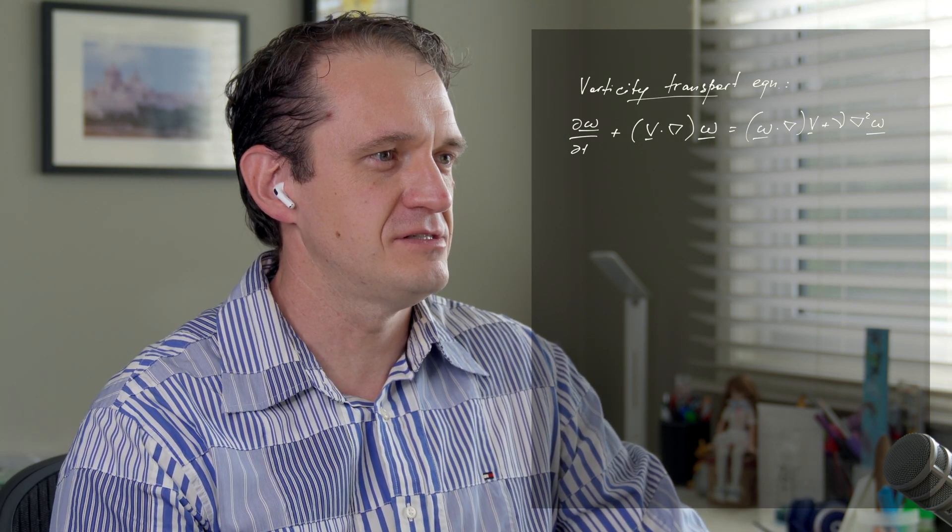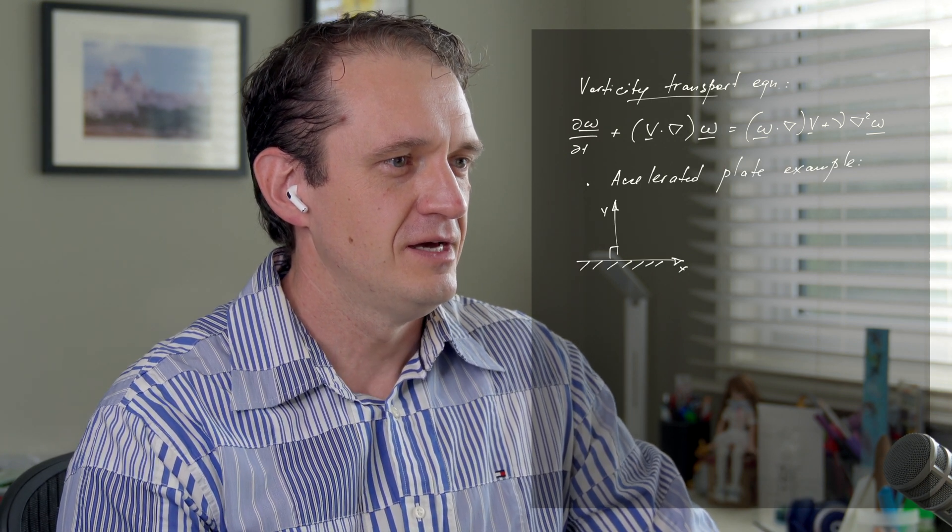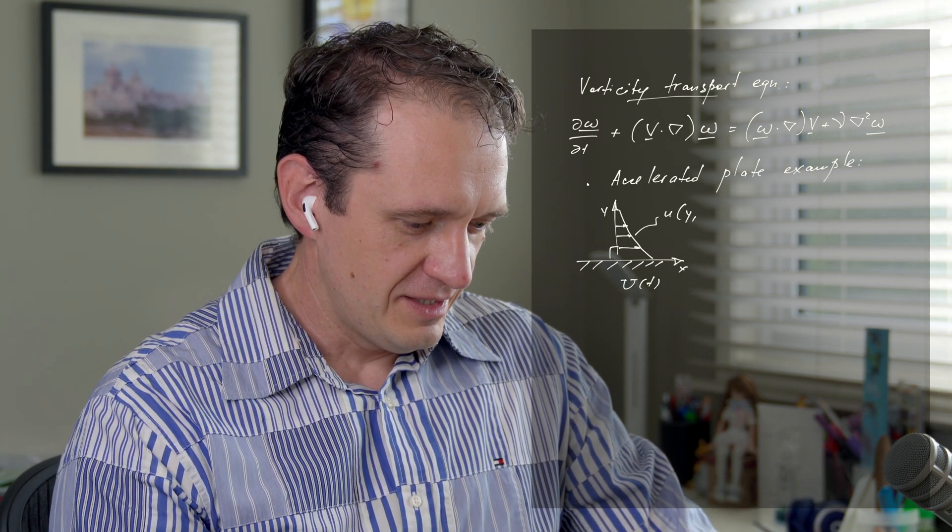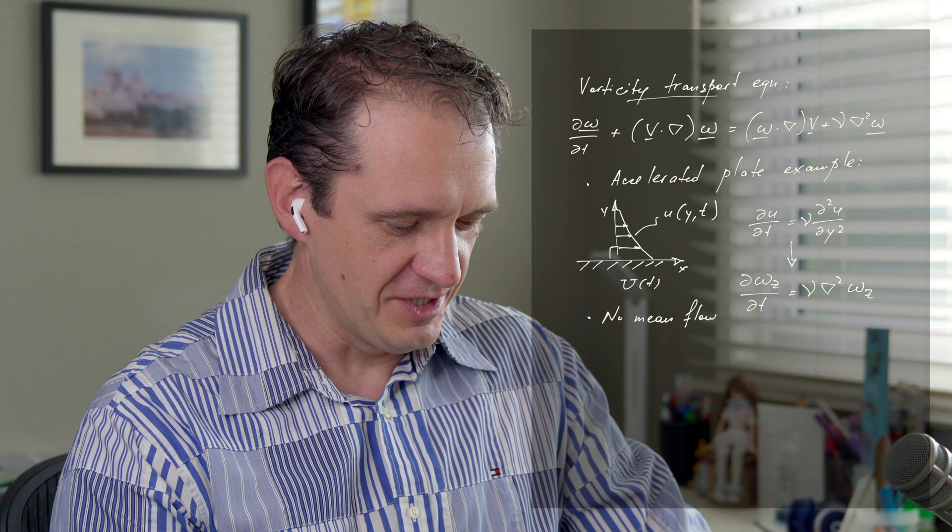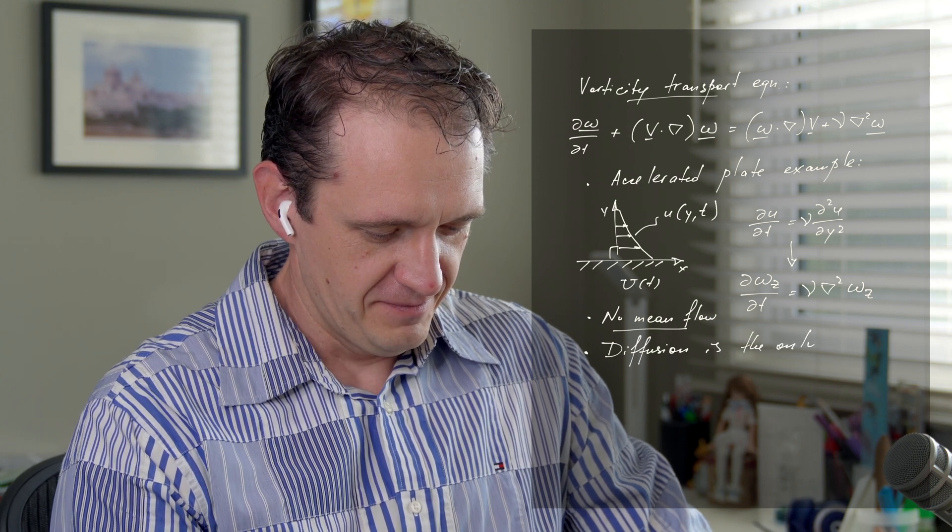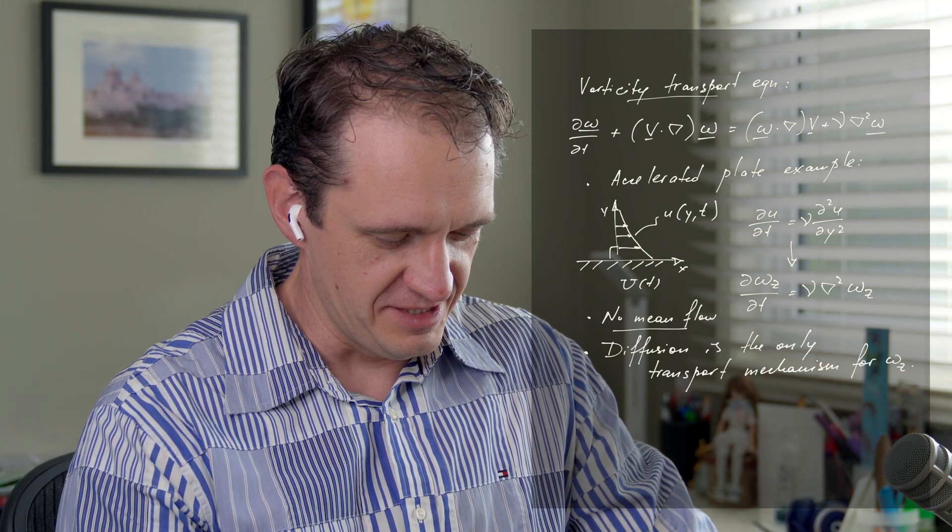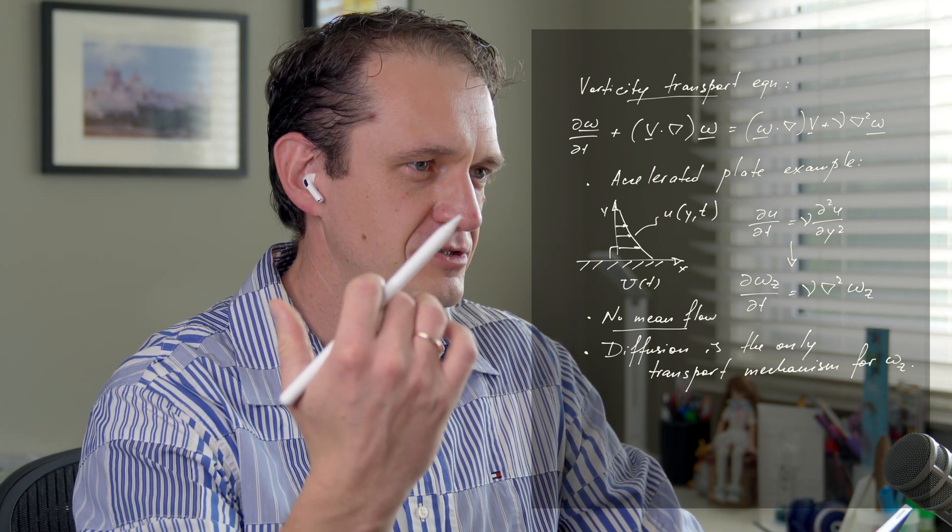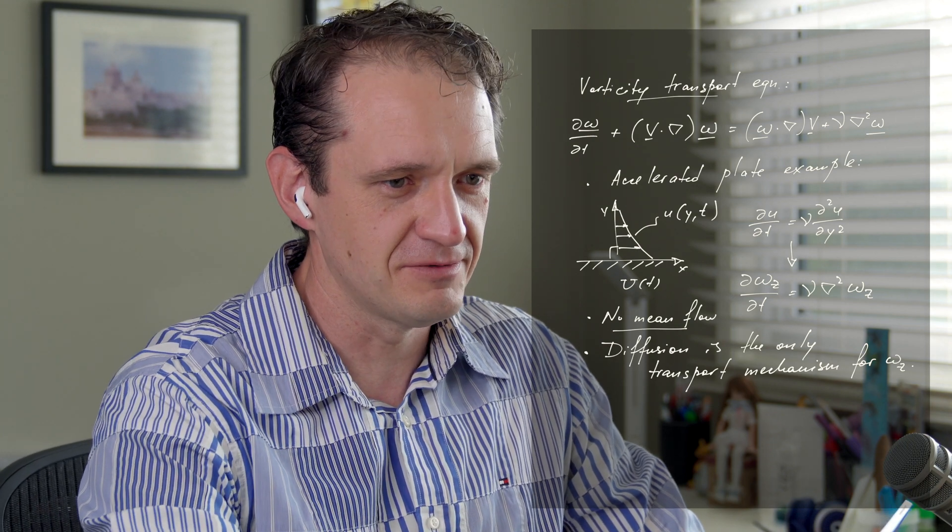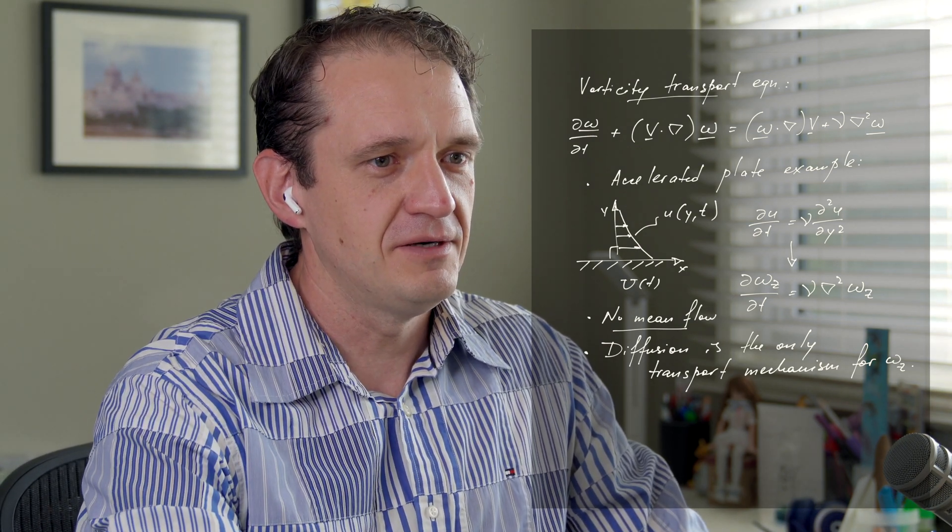We looked at this equation at the top of the page from last lecture's notes. This is vorticity transport, obtained by taking curl of Navier-Stokes equations. When we consider the example of the accelerated plate, there is a reduced form where local change of vorticity equals the diffusive term on the right, which is del squared of omega. But what about the situation where we have convection and diffusion?